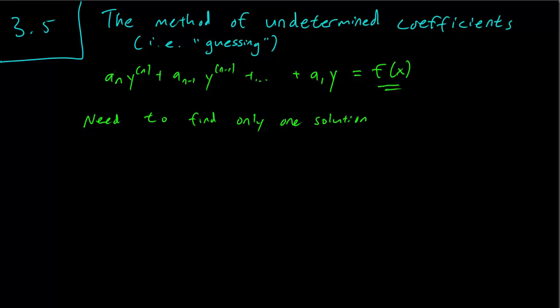The question is, how do you find that one solution? And this is very often a difficult problem. But we can often just find the solution by guessing, or as the book calls it, the method of undetermined coefficients.